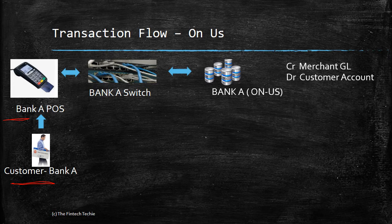What are the accounting entries for an on-us transaction? The system credits a merchant GL — a parking or merchant suspense GL — and debits the customer account. Importantly, the merchant is not credited online directly. This is because merchants may have multiple outlets with multiple POS machines, so concurrent transactions could cause account locks. Also, merchants prefer a consolidated statement entry post all refunds or disputes, rather than multiple small micro-transactions.